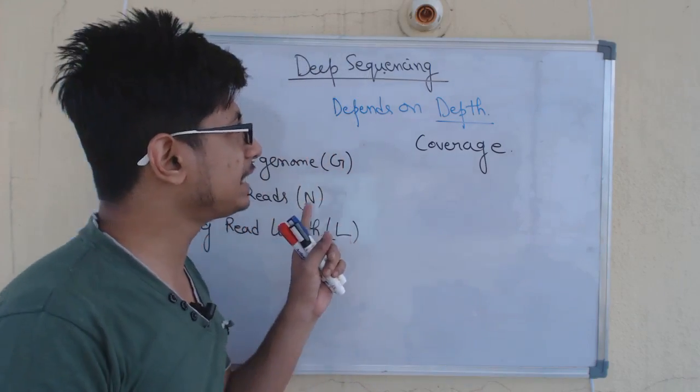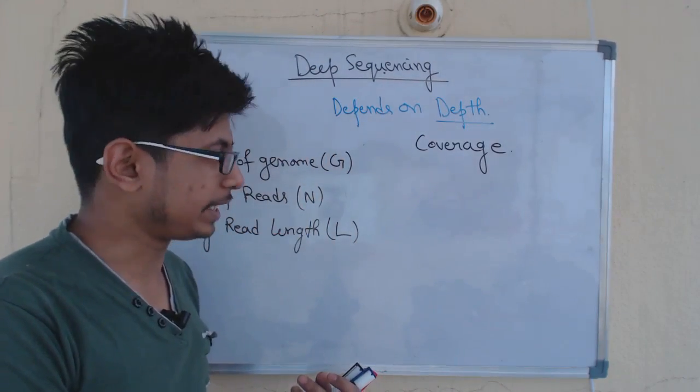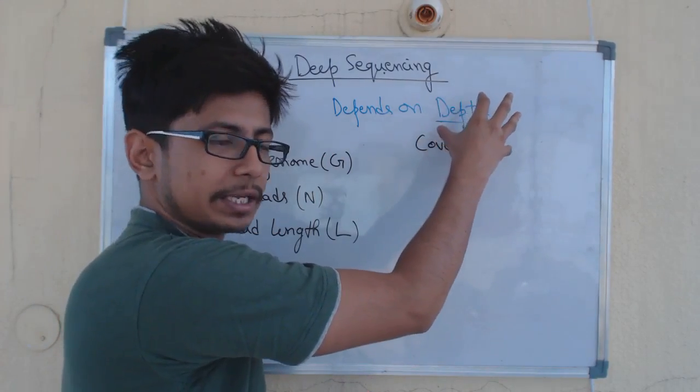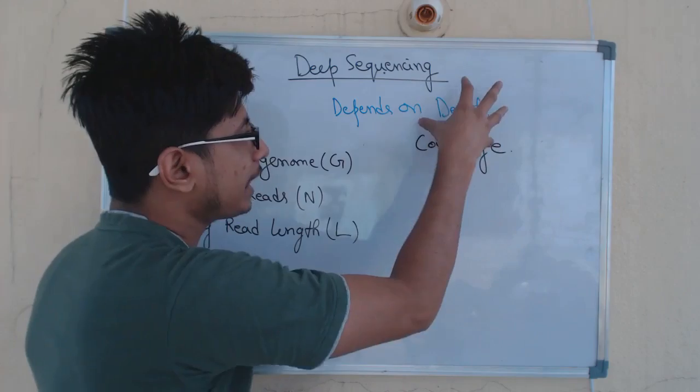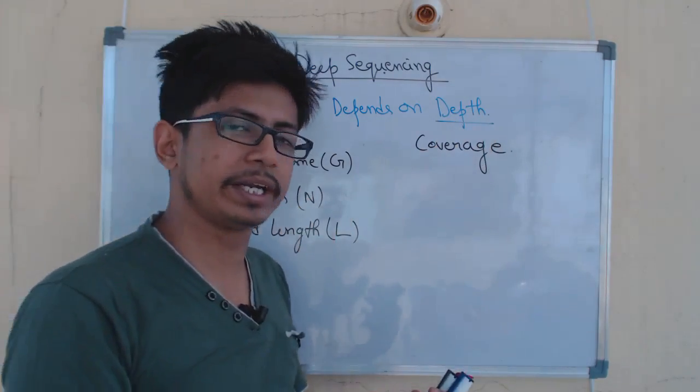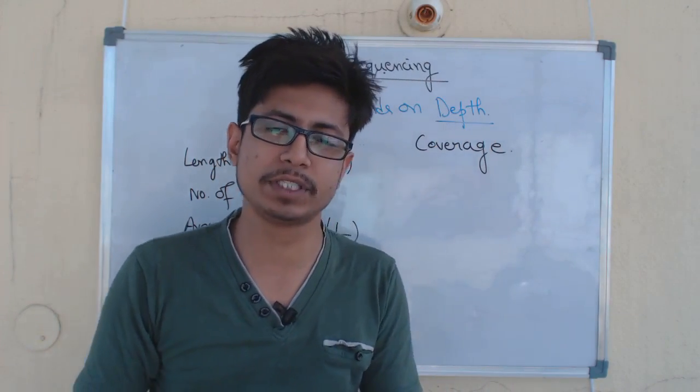It is a category of sequencing depending upon the depth of that sequencing or the coverage of that sequencing. Now, depth and coverage of the sequencing is counted based on how many number of times you run the sequencing for a specific fragment of DNA, a specific length of DNA.